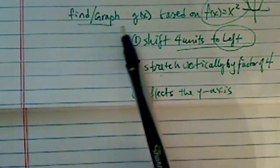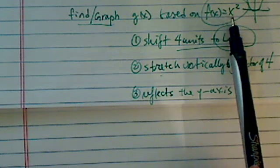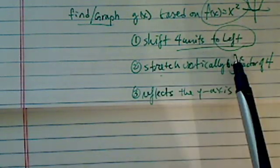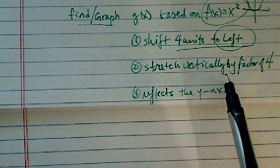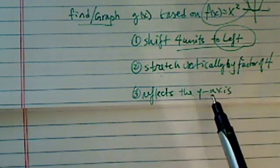We have an interesting problem here. We're supposed to find a graph of g(x) based on its base function, which is y = x². We're going to shift four units to the left, and then stretch it by a factor of 4 vertically, and then reflect by the y-axis.